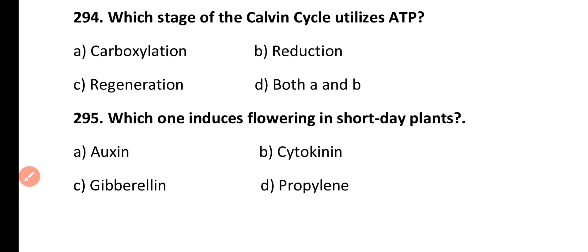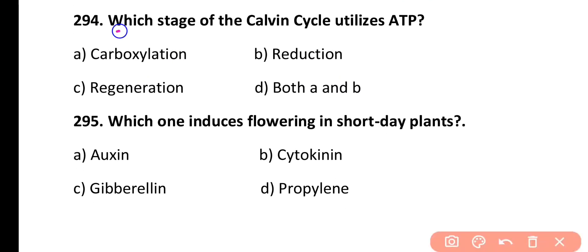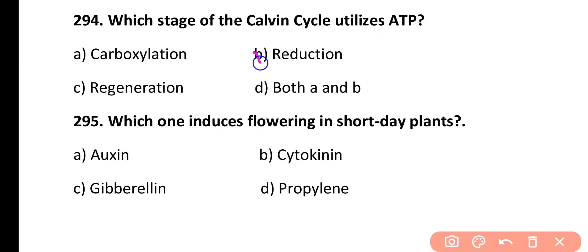Question 294. Which stage of the Calvin cycle utilizes ATP? Carboxylation, Reduction, Regeneration, or both A and B. Correct answer is Option B. Reduction is the stage of the Calvin cycle where ATP is utilized to convert 3-phosphoglyceric acid into glyceraldehyde 3-phosphate.